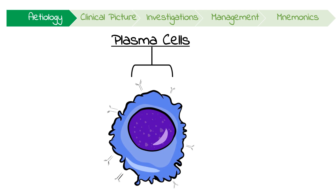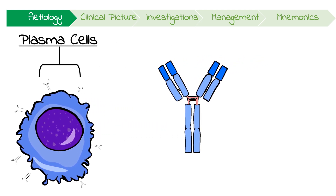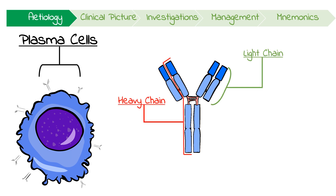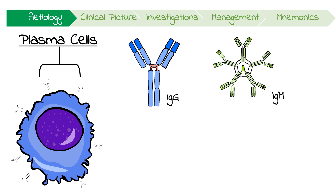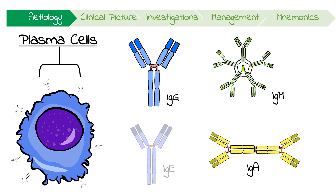Let's start with its pathophysiology. Plasma cells are derived from B-cells and produce unique immunoglobulins. Antibodies have a light chain and a larger heavy chain. Furthermore, these antibodies are classified into several types or isotypes like IgG, IgM, IgA or IgE depending on their structure.